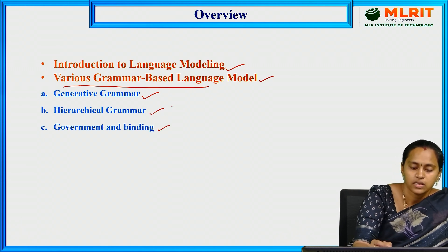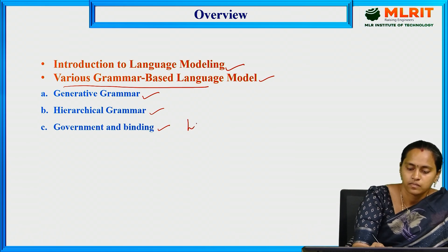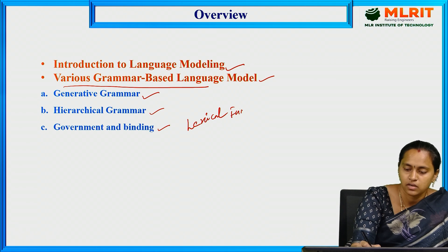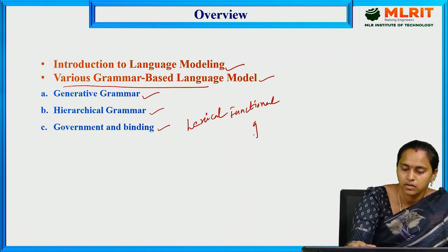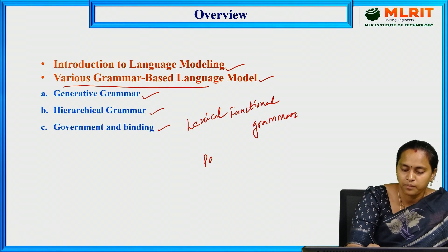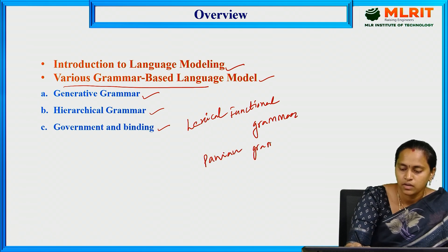The fourth type is lexical functional grammar, and the fifth is Panini grammar-based model.